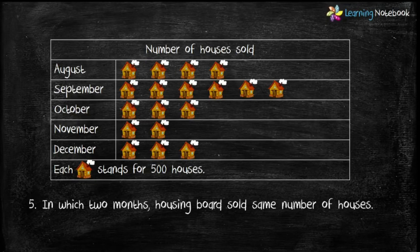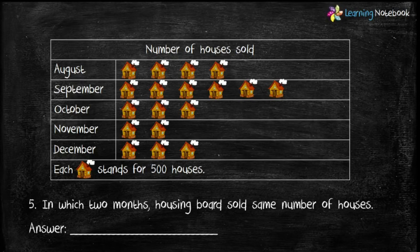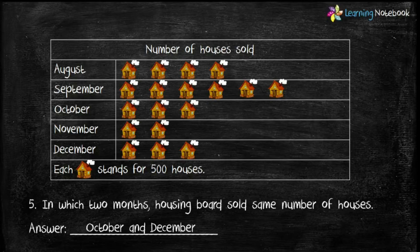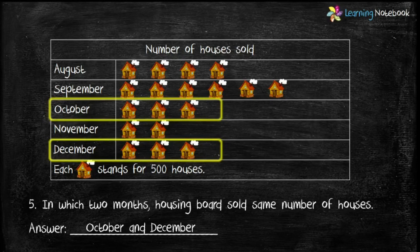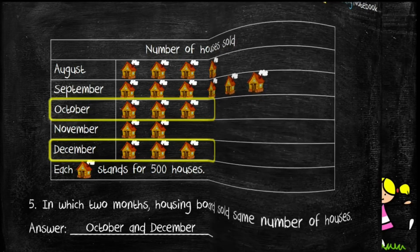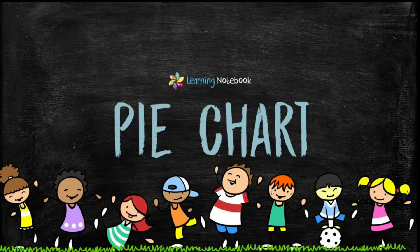Question five: in which two months did the housing board sell the same number of houses? Looking at the pictograph, October and December have the same count of pictures, so the same number of houses were sold in both months. Our answer is October and December. Now let's understand what a pie chart is.